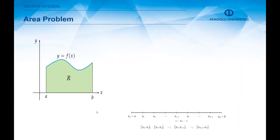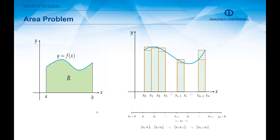We want to construct rectangles inside this region R, or inscribing or circumscribing this region, so that we can get closer and closer to this area. To this end, we need to divide the interval a, b into n subintervals by selecting n points in the interval a, b, starting with x₀ equals a, x₁, x₂, and so on, and xₙ equals b.